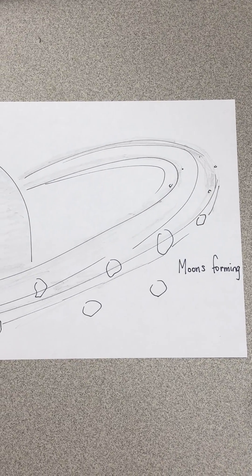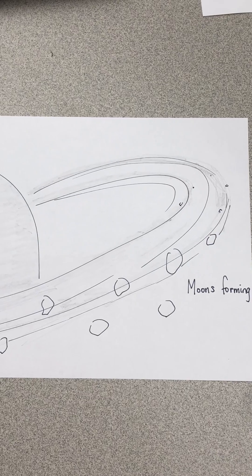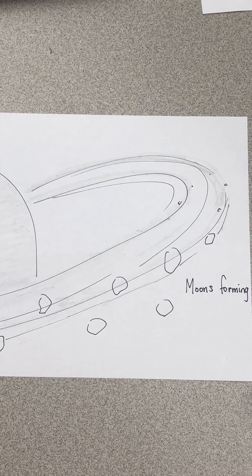There is also leftover material in the form of the asteroid belt from our terrestrial planets and leftover material from the Jovian planets in the form of comets.